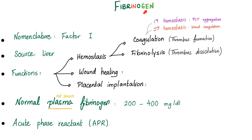Fibrinogen causes the genesis of fibrin. Fibrin ends in -in because it's a protein — it's a fibrous protein. Nomenclature: fibrinogen is the same as factor 1. Where did it come from? From the liver. It's one of the coagulation factors and one of the plasma proteins. What kind? It's globulin — specifically beta globulin.